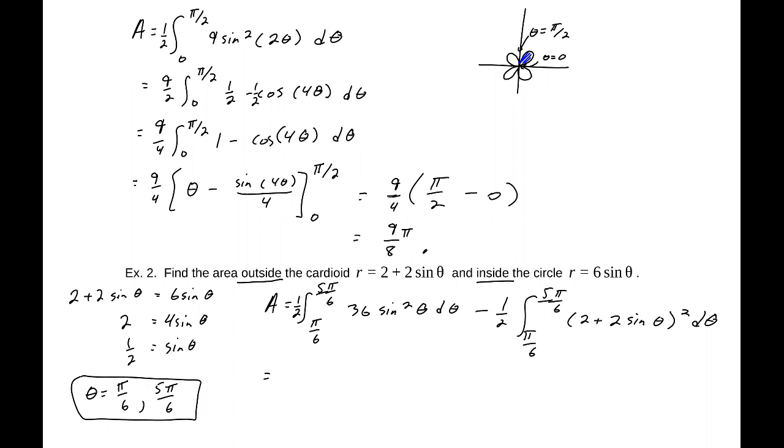Minus one half integral from π/6 to 5π/6 of our inner function squared: (2 + 2sin(θ))² dθ. Let's clean some things up. That's 18 integral π/6 to 5π/6 of sin²(θ) dθ. This, if I'm going to factor in my 1/2 as I go, this is going to be minus 2 times the integral from π/6 to 5π/6 of (4 - 4sin(θ) + 2sin²(θ)) dθ.